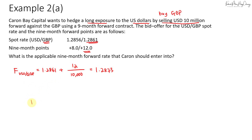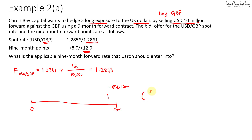The forward rate for dollar-to-pound where we can buy pounds and sell 10 million US dollars is 1.2861 plus 12 over 10,000, equaling 1.2873. If I hold this contract for nine months, I'll sell USD 10 million and receive pounds. The amount of pounds received is USD 10 million divided by 1.2873, which equals approximately 7.768 million pounds.